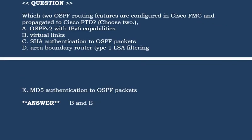Next question: Which two OSPF routing features are configured in Cisco FMC and propagated to Cisco FTD? Choose two options. Option A: OSPF V2 with IPv6 capabilities. Option B: Virtual links. Option C: SHA authentication to OSPF packets. Option D: Area boundary router type 1 LSA filtering. Option E: MD5 authentication to OSPF packets. Correct answer is Option B and Option E.